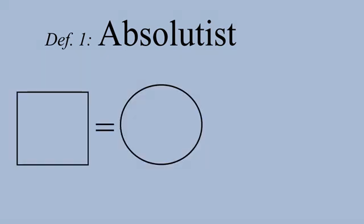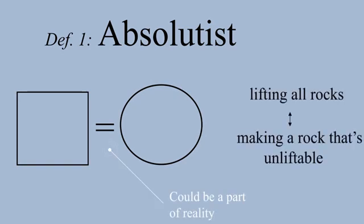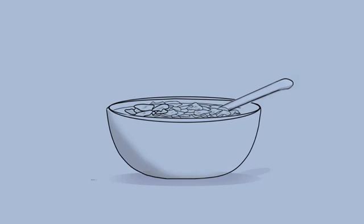First, let's apply this to the absolutist view. Under the absolutist view, God can perform even logically paradoxical actions like create a square circle. If logically paradoxical things could be a part of reality, then the fact that lifting all rocks and making a rock that's unliftable are mutually exclusive is not an objection to God's omnipotence, because by definition, logically paradoxical states of affairs could be a part of reality. As Alvin Plantinga puts it, such a God would eat logical paradoxes for breakfast.